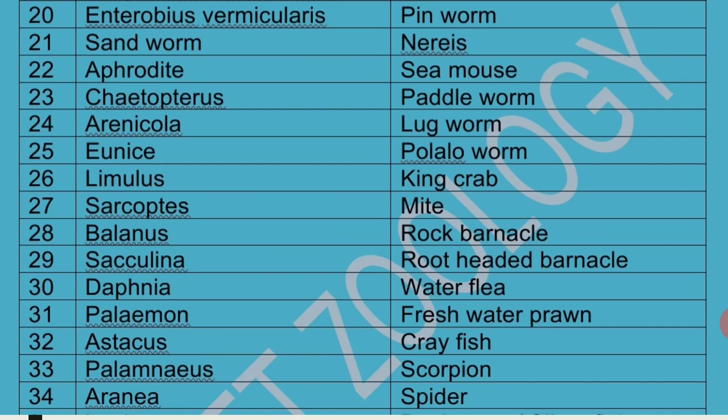Sarcoptes' common name is Mite. Balanus is commonly called Rock Barnacle. Sacculina is called Root Headed Barnacle. Daphnia is commonly called Water Flea and exhibits Cyclomorphosis.